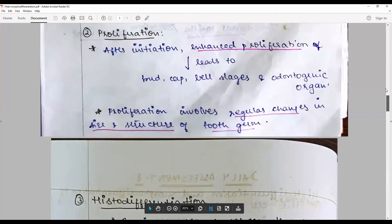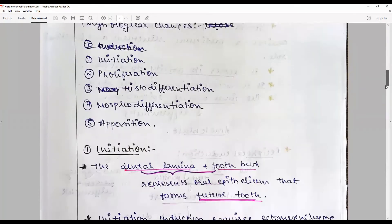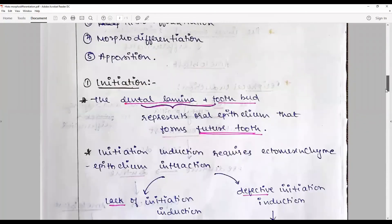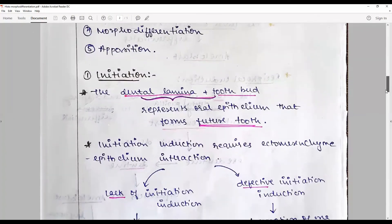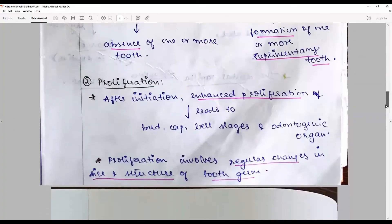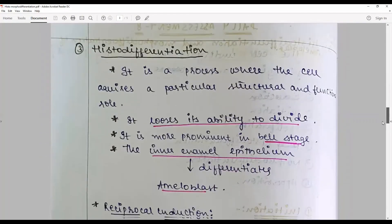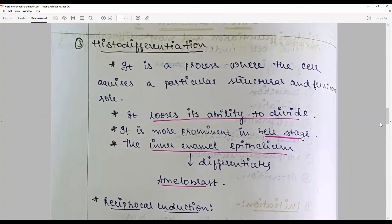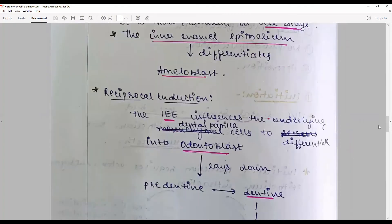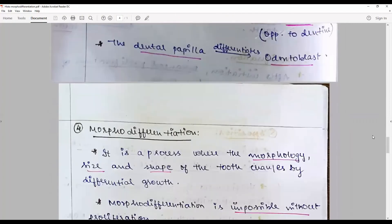To recapitulate, for histo-morpho-differentiation, we talk about the various stages: which stage happens, lack of initiation and induction, the proliferation process and changes, what happens in histo-differentiation, the ability to divide, bell stage, ameloblast, reciprocal induction, and how dental papilla changes in this stage.